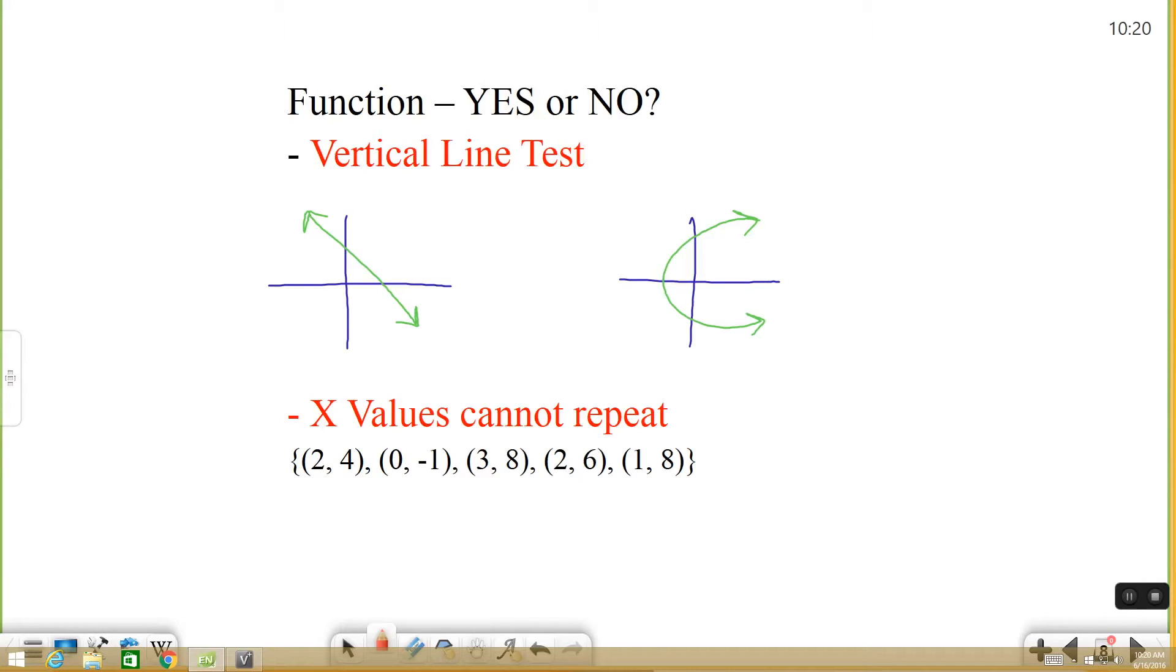A couple questions I've seen on the test will be asking about whether something is a function or not. They'll give you either a graph or a set of points. If they give you a graph it's really easy to see if something is a function or not - it has to pass what's called the vertical line test, which is basically what it sounds like. You draw a vertical line through your function, and if it only crosses the line of the function one time then yes it is a function. If it crosses more than one time, no it's not a function.